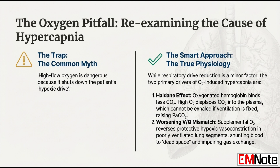Let's start with the most common intervention: oxygen. We're all taught that giving high-flow oxygen to a COPD patient can cause a dangerous rise in carbon dioxide, or hypercapnia. The old story was that it knocks out their hypoxic drive. But that reduction in ventilatory drive is a real thing only as a minor factor — focusing on the drive is a bit of a red herring.